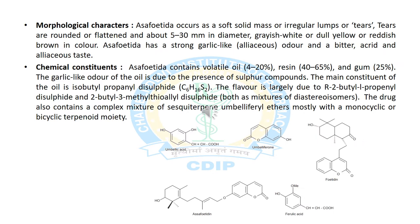Now we will discuss the morphological characters of Asafoetida. It is a soft solid mass, irregular or tear in shape, with a diameter of 5 to 30 millimeters. It is grayish white or yellow in color and has a strong garlic-like odor and bitter acrid taste. The chemical constituents include volatile oil, resin and gum compounds. It also contains sulfur compounds responsible for its garlic-like odor, isobutylpropenyl disulfide, a mixture of sesquiterpenes and monocyclic and bicyclic terpenoids.